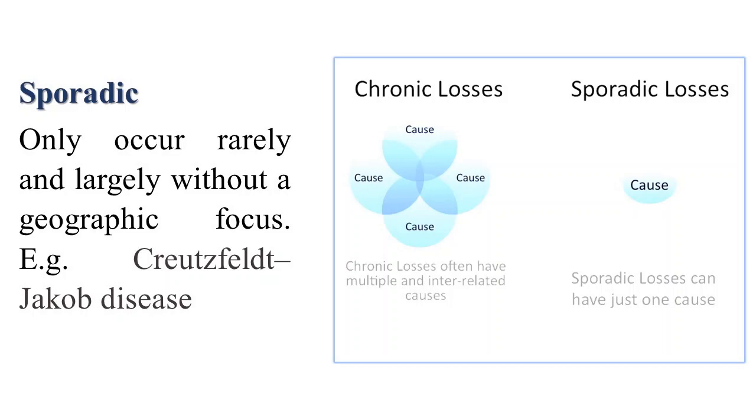Sporadic diseases only occur rarely and largely without a geographic focus. For example, Creutzfeldt-Jakob disease.